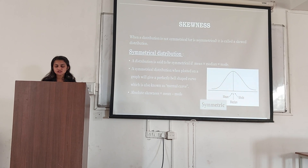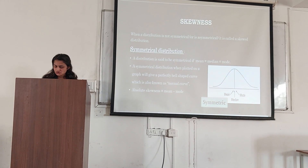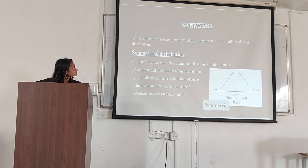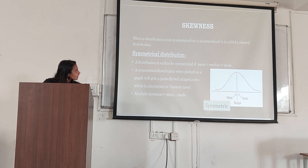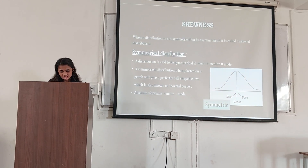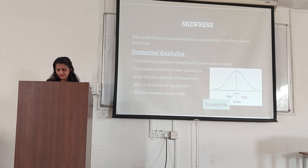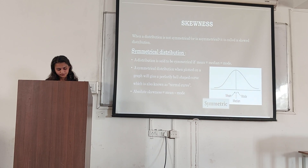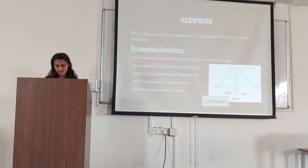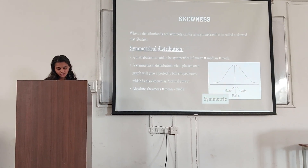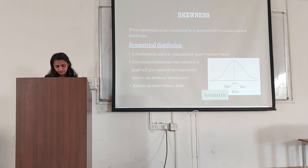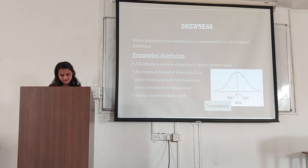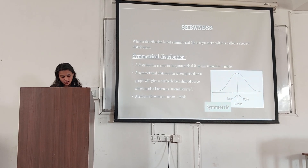When a distribution is not symmetrical, it is called a skew distribution. A distribution is said to be symmetrical if mean is equal to median is equal to mode. A symmetrical distribution appears on a graph as a perfectly bell-shaped curve, which is also known as a normal curve.